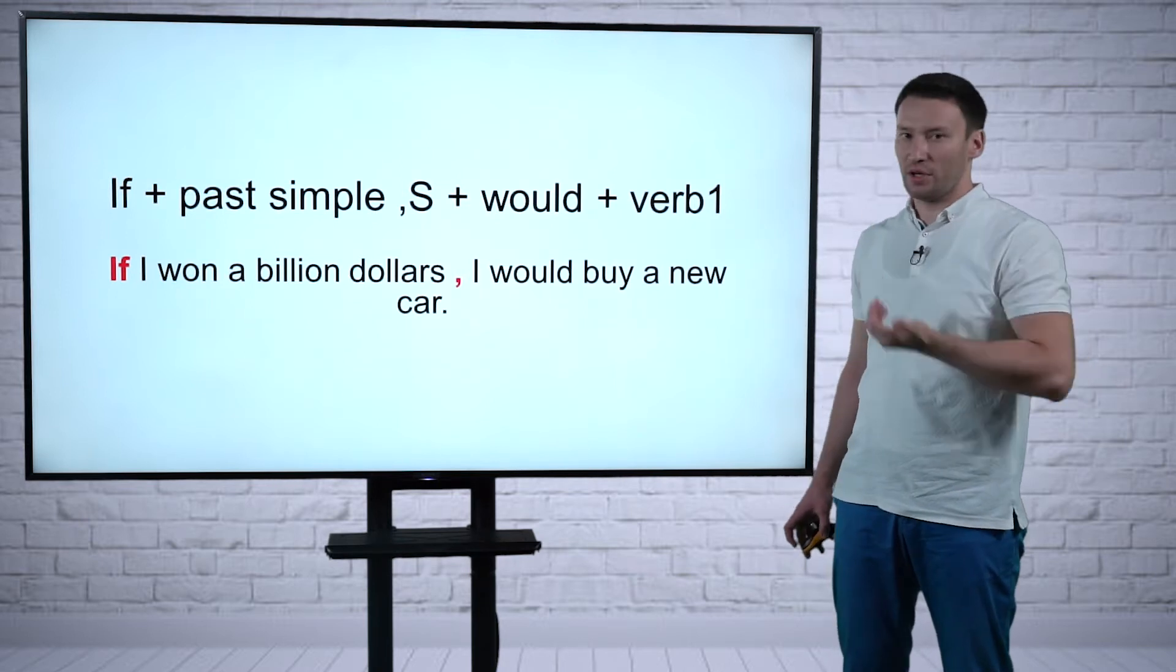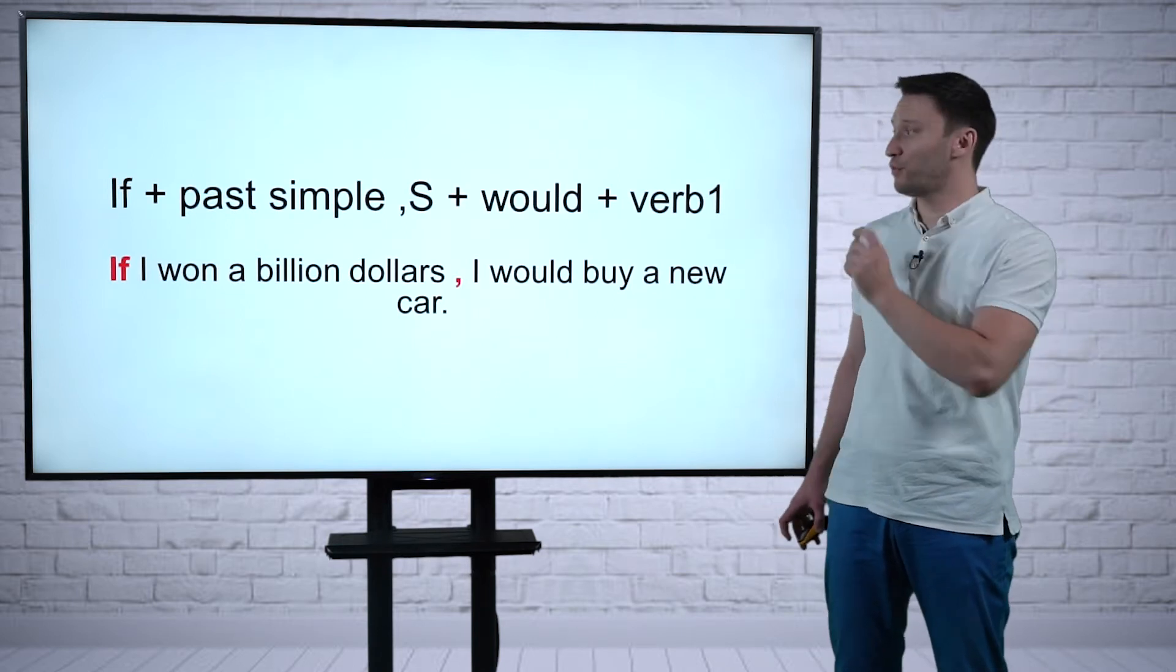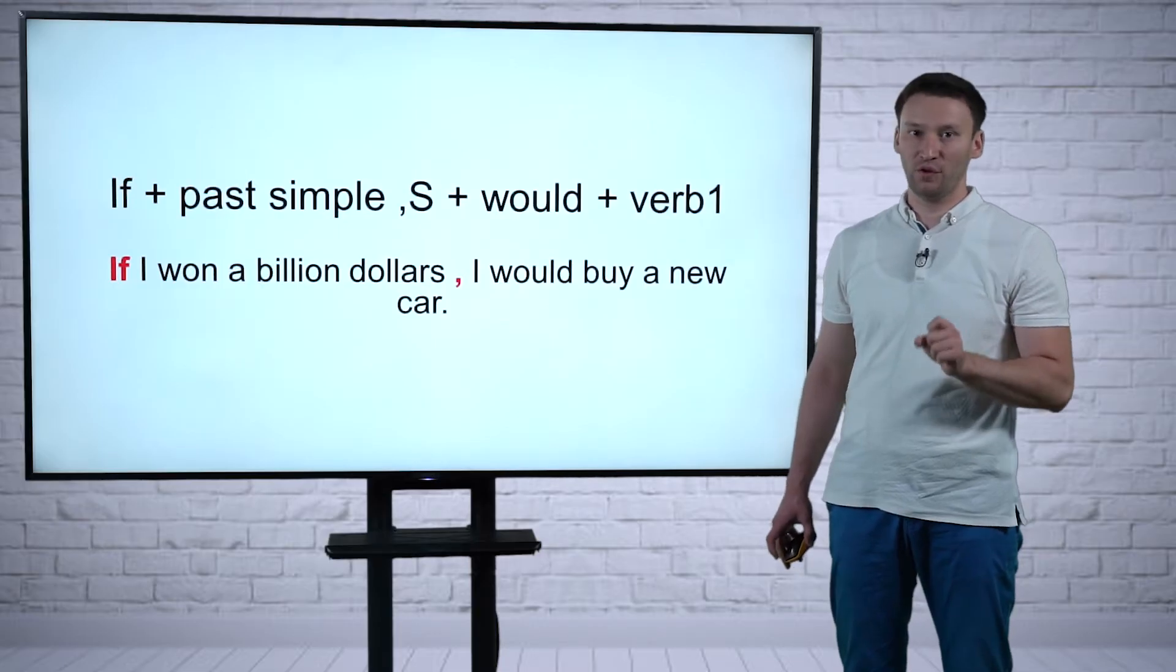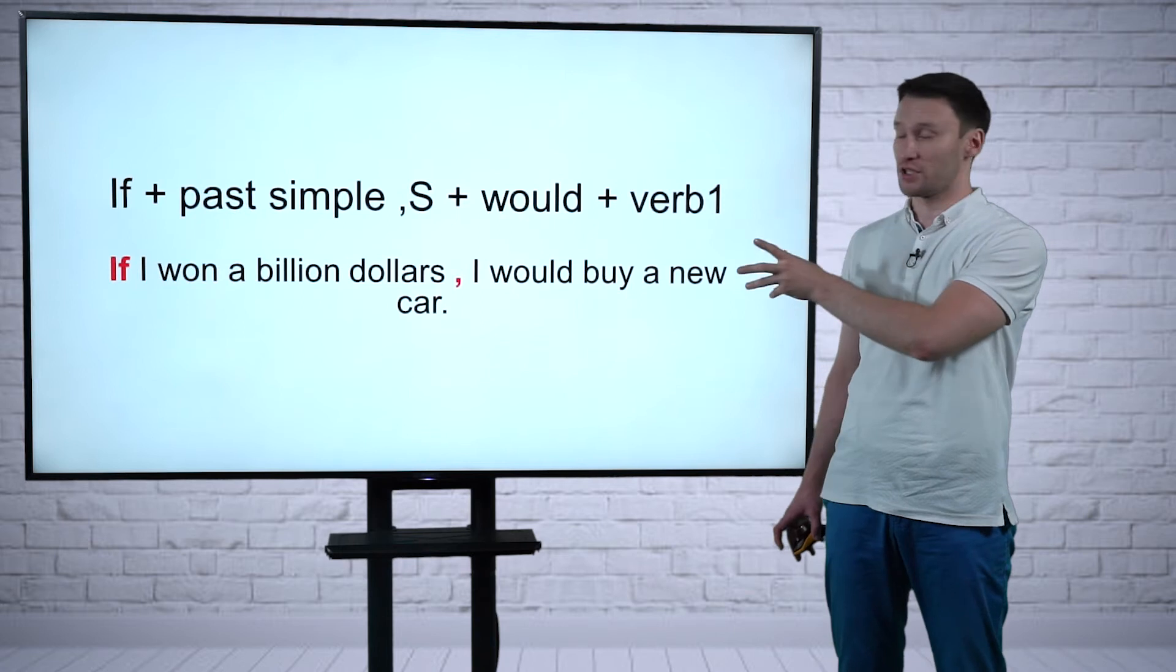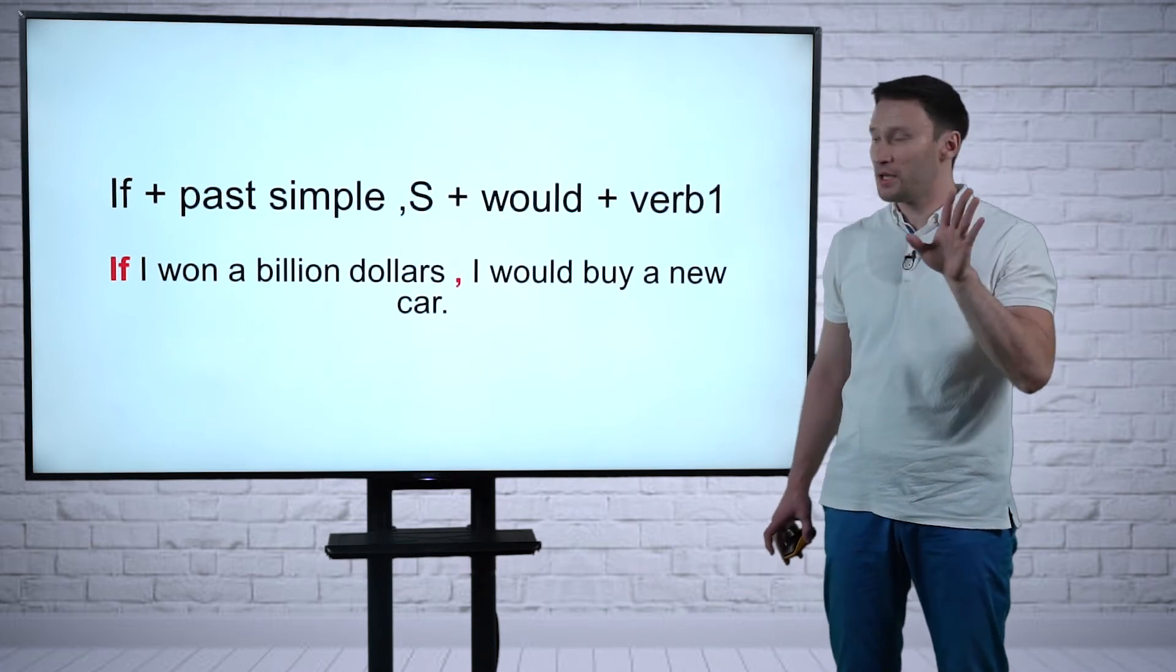Let's look at an example. The structure begins with if: If I won a billion dollars, I would buy a new car. The same happens with if, and there is a comma. What happens if you change the clause, the two parts? Let's say: I would buy a new car—there is no comma—if I won a billion dollars.